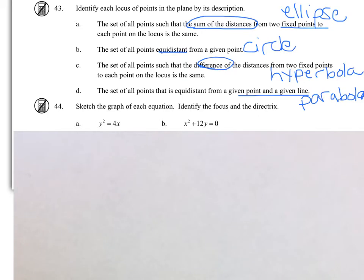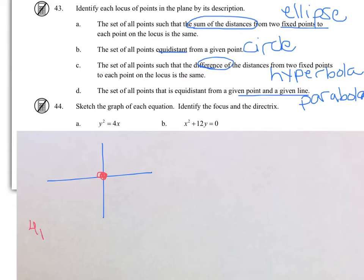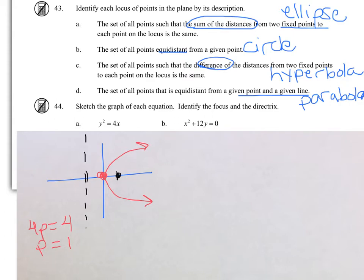For graph A, the vertex is at (0, 0). To figure out the directrix and the focus, the coefficient on the non-squared term is 4P, so P is 1. Since it's Y squared and the coefficient of 4 is positive, it opens to the right. The focus is 1 unit inside the parabola, the directrix is 1 unit to the left — X equals negative 1. The focus is the point (1, 0).